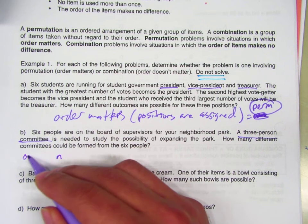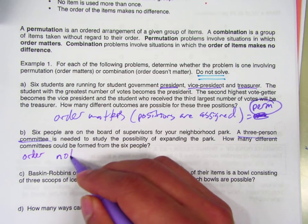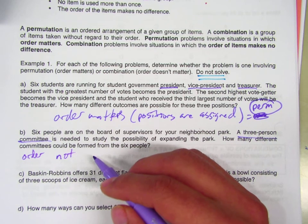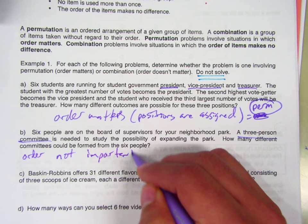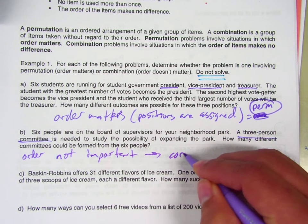This one is order not important. It's just a matter of who is on the committee, not necessarily who got chosen first, second, or third. So this is going to be a combinations problem.